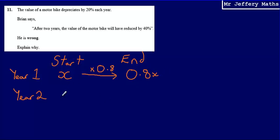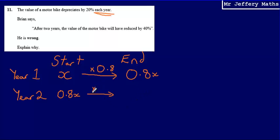At the start of the second year, the bike would be worth 0.8X. Then to get to the end of the year, because it depreciates by 20% each year — and that's the important statement — to get from the start of year two to the end of year two, we multiply again by 0.8, because a reduction of 20% gives a percentage multiplier of 0.8.